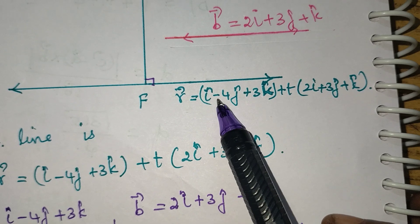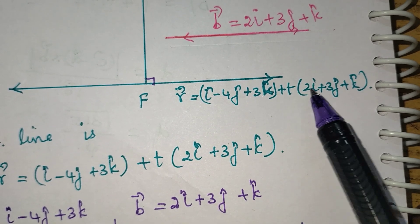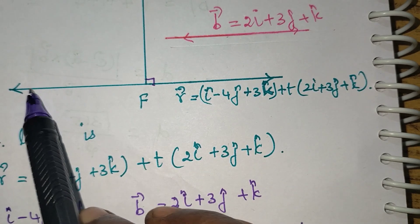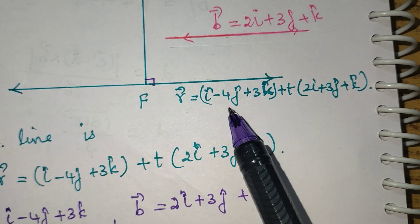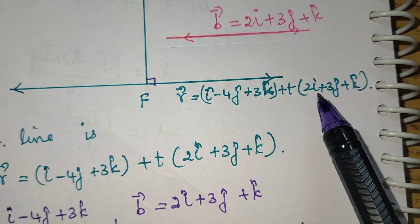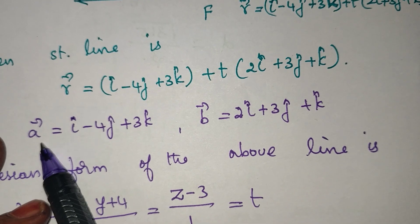The line is: r vector equals i - 4j + 3k + 3 times (2i + 3j + k). This is the line. This is the point vector and this is the parallel vector.